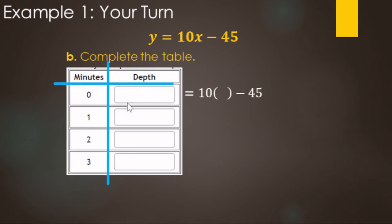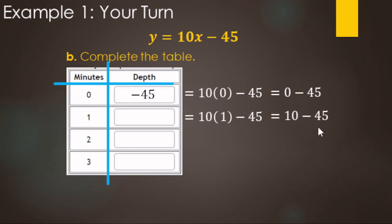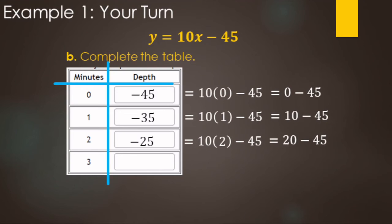For minute 1: replace X with 1, so 10 times 1 is 10, minus 45 gives negative 35. For minute 2: 10 times 2 is 20, minus 45 gives negative 25. For minute 3: 30 minus 45 gives negative 15.